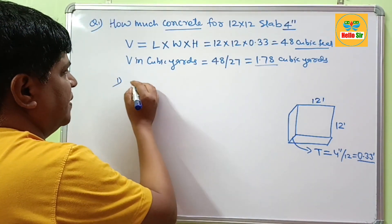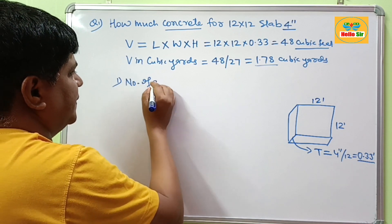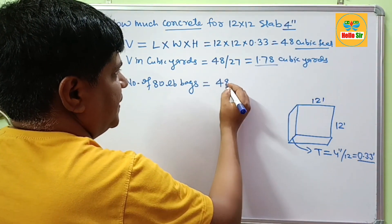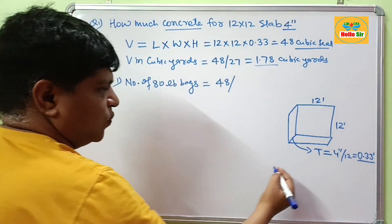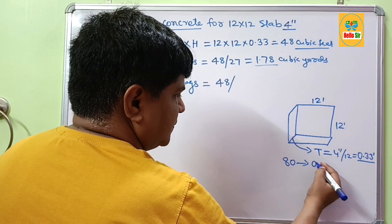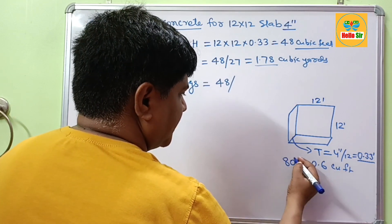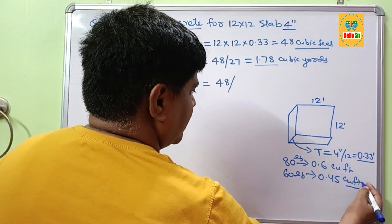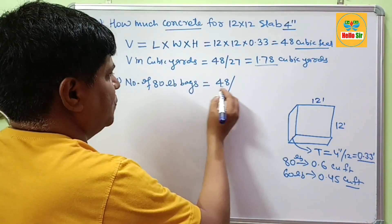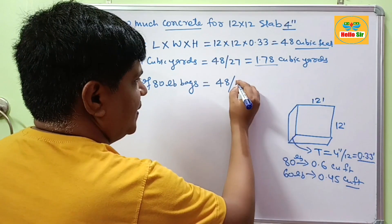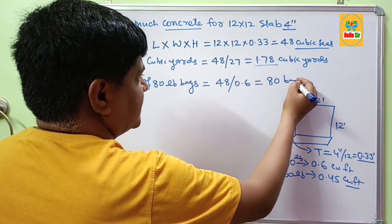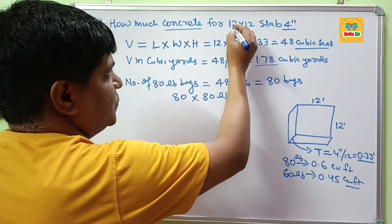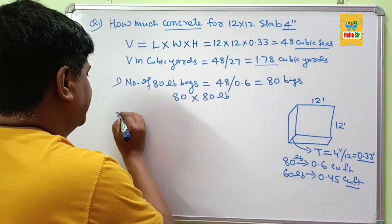If you want to calculate the number of 80 LB bags: the total amount of 48 cubic feet is divided by 0.6 cubic feet per 80 LB bag. If you divide 48 by 0.6, this will count about 80 bags. So 80 bags of 80 LB concrete is sufficient for a 12x12 slab at 4 inch thickness.